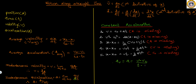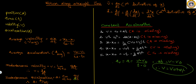Let us say we start from time zero, so t equals zero seconds. This gives us: a times t equals v minus v-naught, so v equals v-naught plus at. Whenever the acceleration is constant, we get v equals v-naught plus at. This is a very important result.